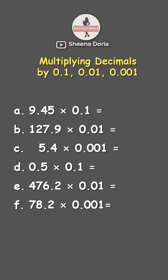For this, we will count the number of decimal places in the multiplier. So for 0.1, we have one decimal place. It means that we will move the decimal point in the 9.45 one time to the left. There you go. So our answer is 0.945, or 945 ten-thousandths.